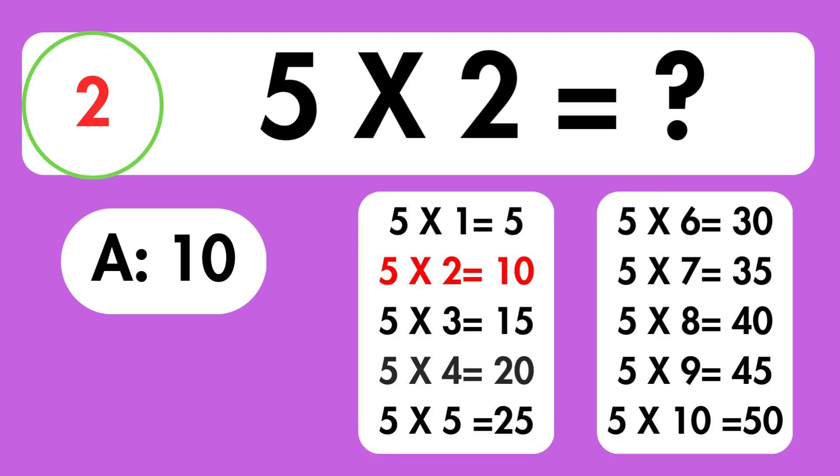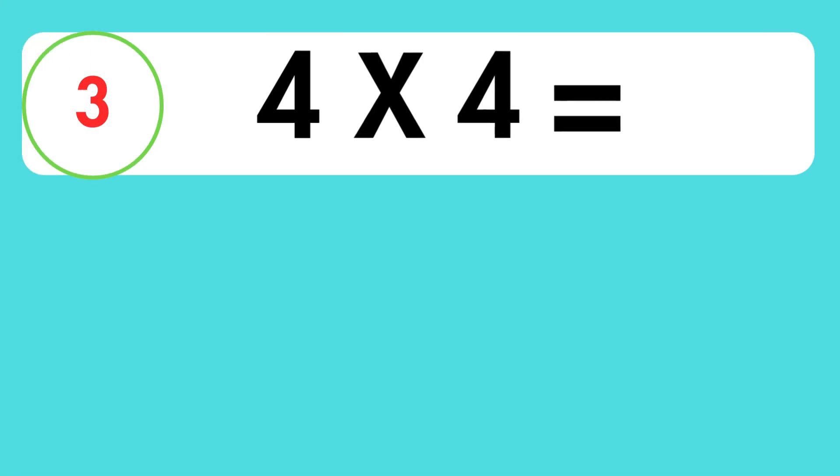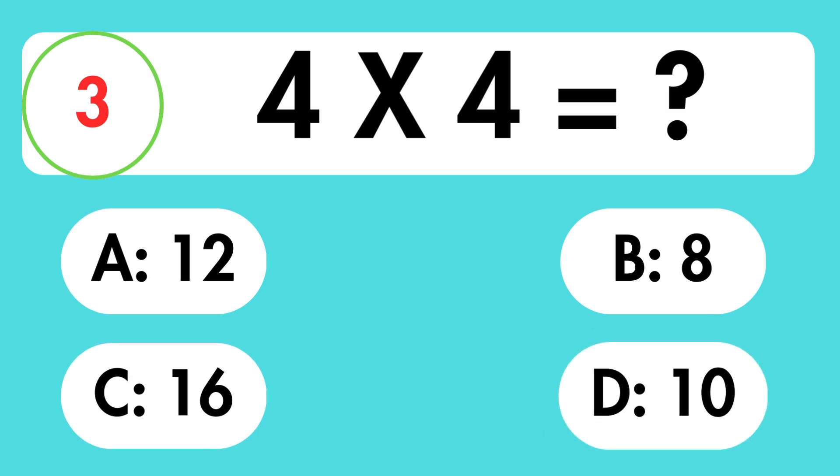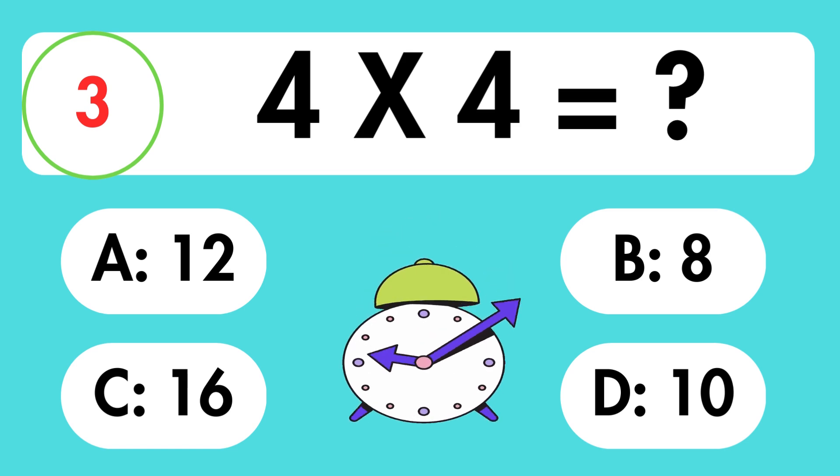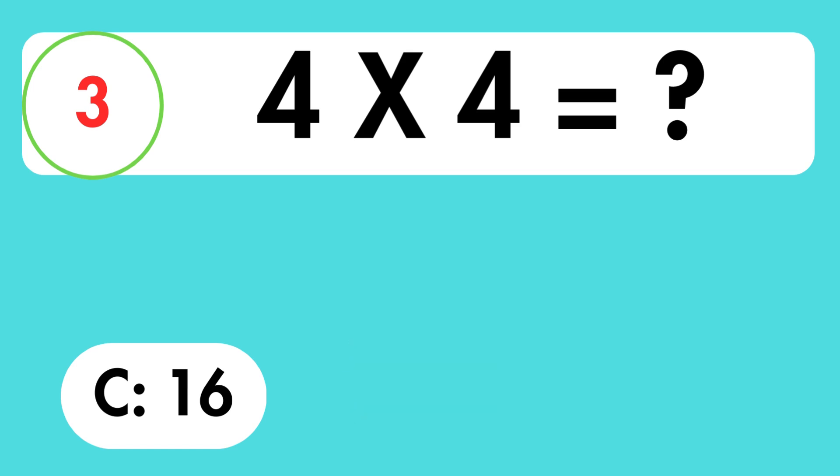5 multiplied by 2 is equal to 10. Question 3. What is 4 times 4 equals? Time's up. The answer is 16.